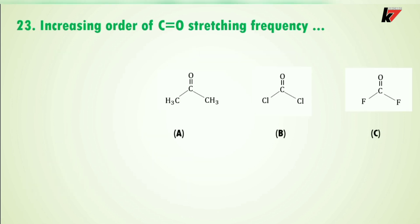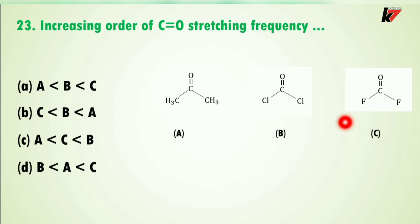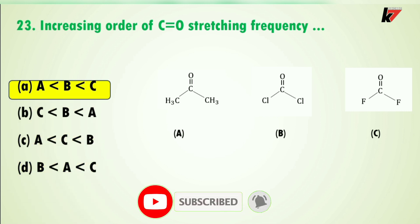Question 23: increasing order of carbonyl stretching frequency — here are three structures with four options. Fluorine is more electronegative than chlorine, so the minus I effect of fluorine increases the stretching frequency of the carbonyl more. Difluoroacetone (C) has the highest frequency compared to B and A. Structure A has the lowest carbonyl stretching frequency due to the minus I effect. The correct order is option A.